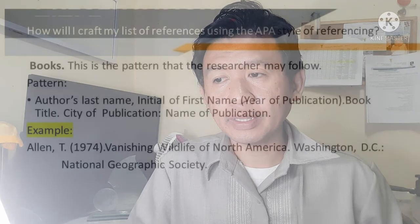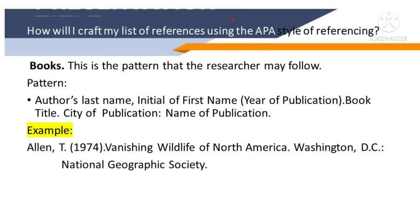How will I craft my list of references using the APA style of referencing? For books, the pattern is: author's last name, initial of the first name, year of publication, book title, city of publication, name of publisher. Example: BC (1974). Vanishing Wildlife of North America. Washington, DC: National Geographic Society.